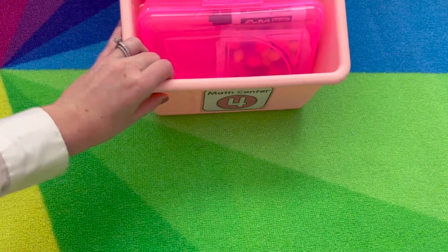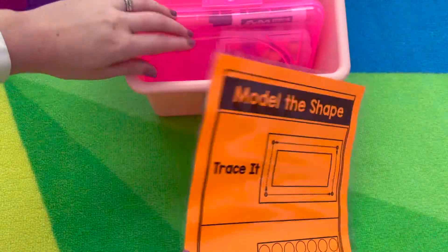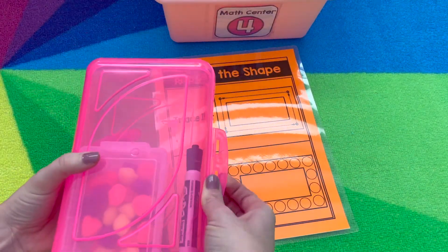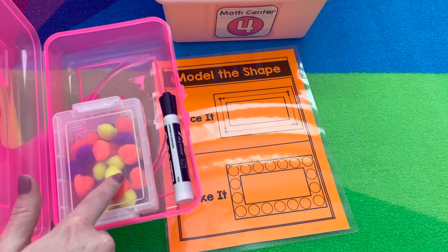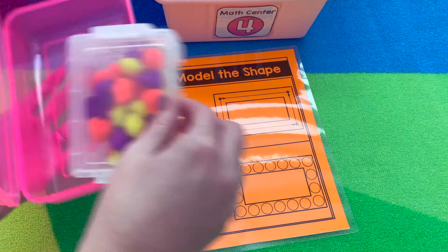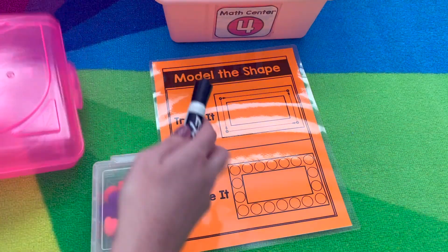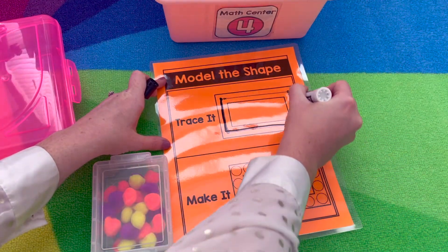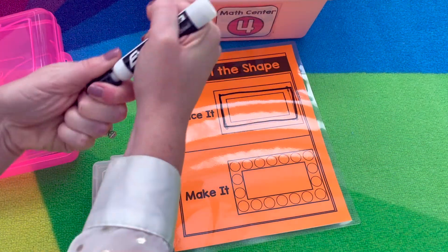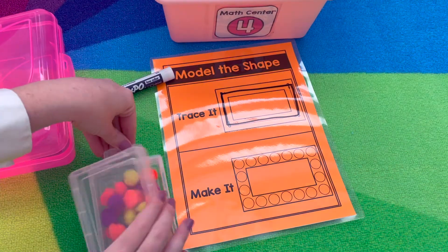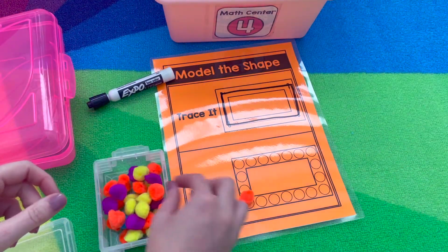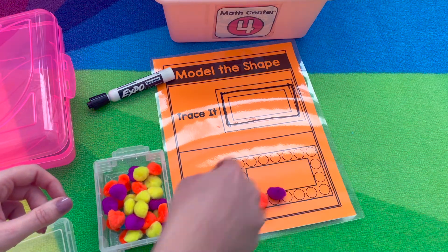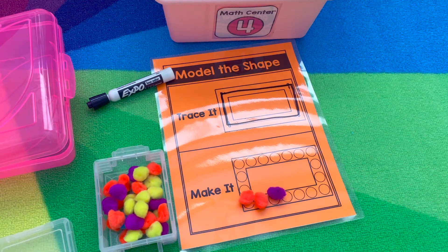Math center four is Model the Shape. We have a model the shape mat, and inside the materials you'll need a dry erase marker and something to make the shape — we're going to use pom poms. First, trace the shape. Then use the pom poms to build or make the shape, filling in all the circles. Continue until they finish the shape, then grab the next mat to model.